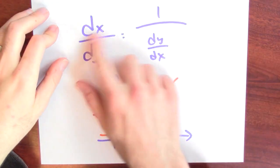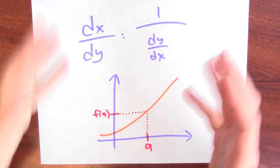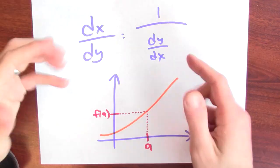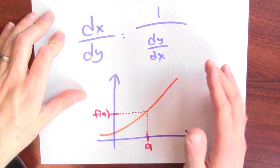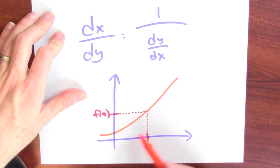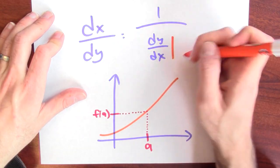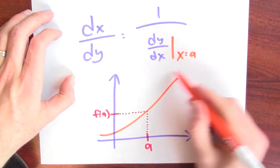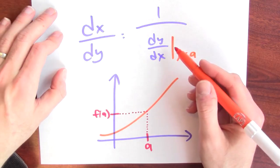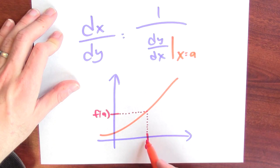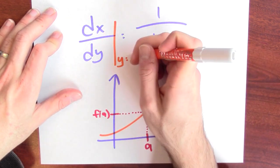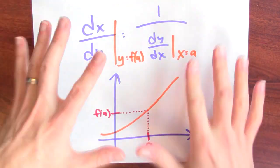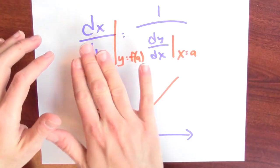But you have to think about where these derivatives are being computed. Maybe you believe that dx/dy is 1 over dy/dx — it makes sense that exchanging the roles of x and y takes the reciprocal of the slope. But where is this wiggling happening? dy/dx is measuring how wiggling x affects y — wiggling around where? Let's suppose that I'm wiggling around a, so I'm really calculating dy/dx when x is at a. This records how wiggling x near a will affect y. Well, if x is wiggling around a, y is wiggling around f of a. So the derivative on this side is really being calculated at y equals f of a. It's really necessary to keep track of where this wiggling is happening in order to get a valid formula.